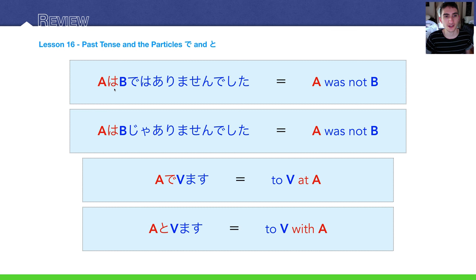So, we have A wa B de wa arimasen deshita. A was not B. A wa B ja arimasen deshita. Again, A was not B.